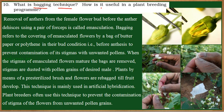What is the bagging technique and how is it useful in a plant breeding program? The bagging technique is used in artificial hybridization, which is a process performed by humans. In plants, the gametes are non-motile, and for fertilization to occur there are different kinds of pollinating agents — wind, water, birds, animals, etc.